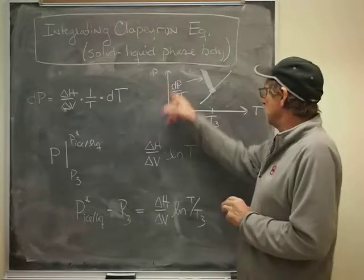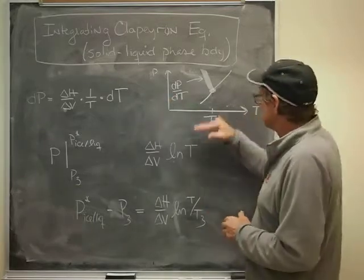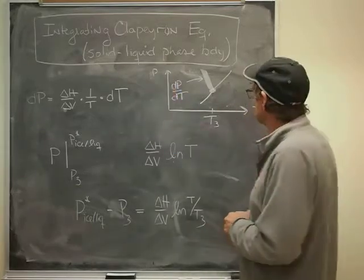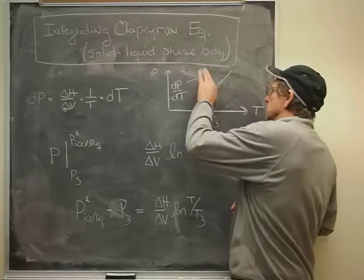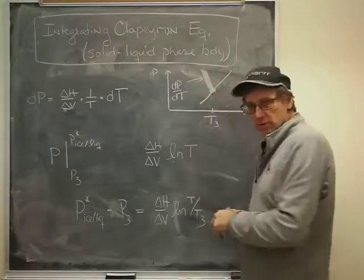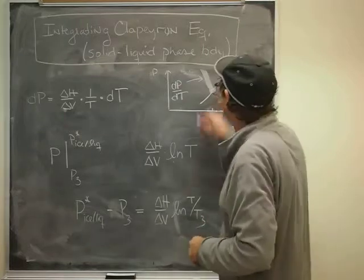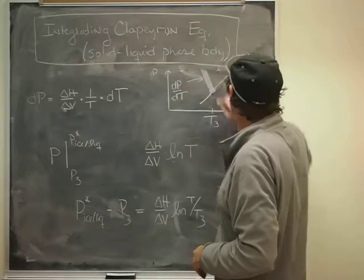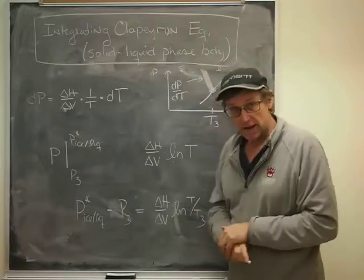So, just to orient you, we have a phase diagram here. Temperature on this axis, pressure on that axis. And each one of these phase boundaries is a line of equilibrium between different phases, so that would be the solid, liquid, and gas regions.